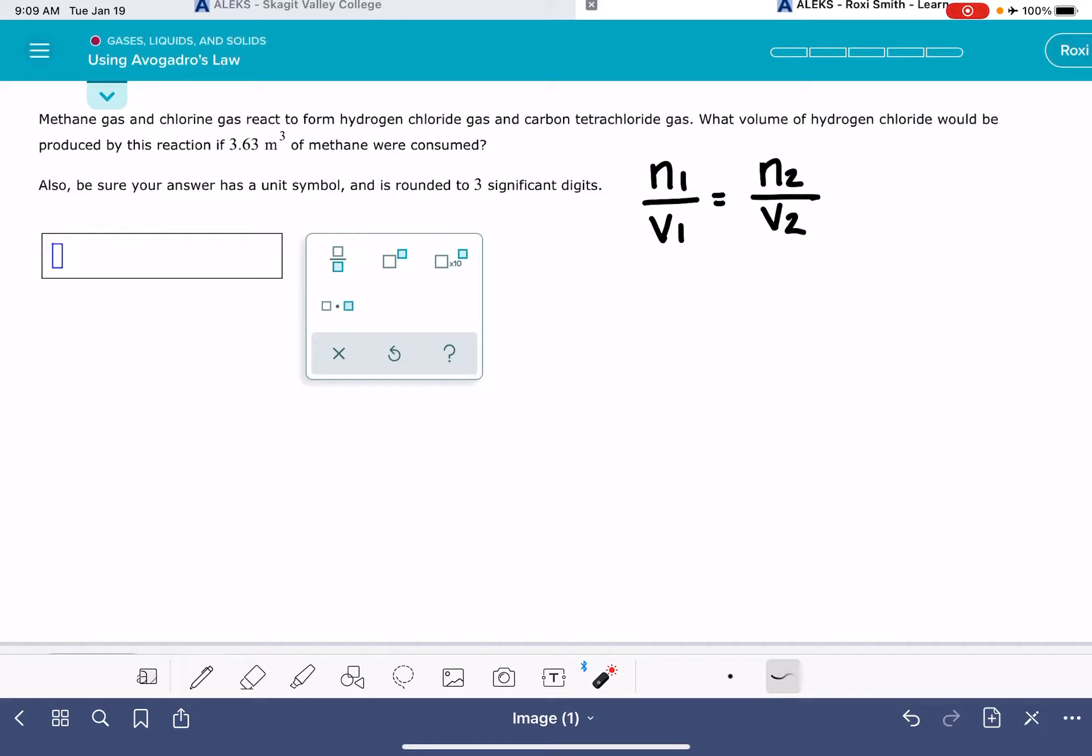This problem is a little bit trickier than some of the other problems that we've solved similar to this. In previous problems with an equation like this, we've just been given three of the four variables and asked to solve for the fourth. It's been pretty straightforward. If you quickly look at this problem, you'll notice that we've only been given one number in this whole entire problem, which might initially make it seem like we've only been given one variable, and we just have to think a little bit harder about how to solve this problem.